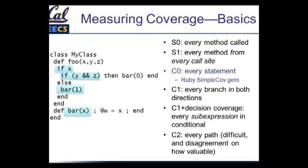No matter which branch of an if statement you took, as long as you touch one or the other branch, you've executed the if statement. So even C0 is still sort of superficial coverage. But the way you really want to read this information is: if you're getting bad coverage at the C0 level, then you have really, really bad coverage. If you're not even making this simple level of superficial coverage, then your testing is probably deficient.